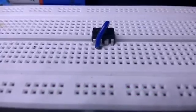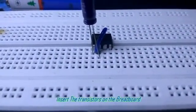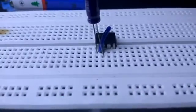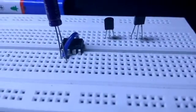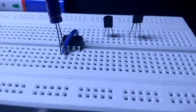Now insert both the transistors on the breadboard. The BC 557 transistor I keep it on the left and the other transistor I keep it on the right.